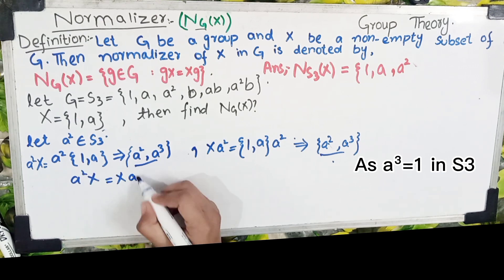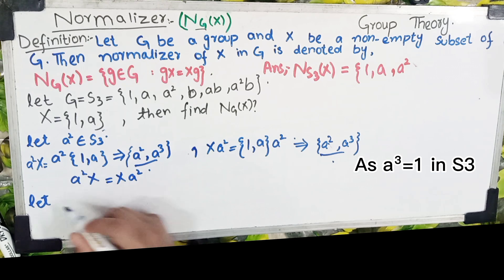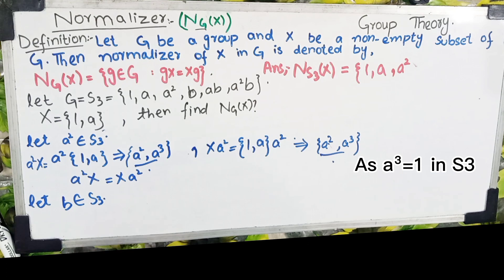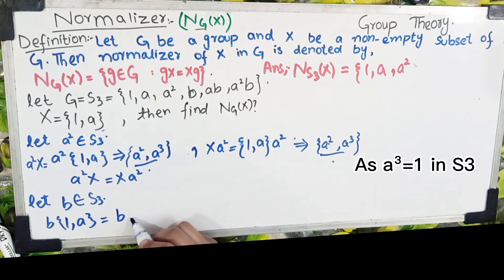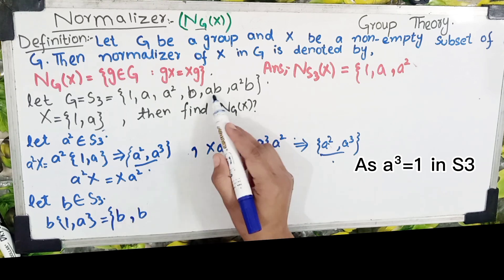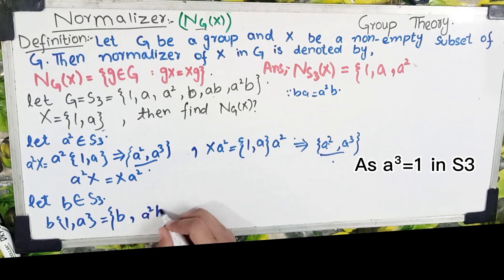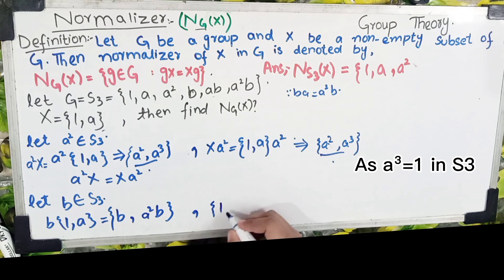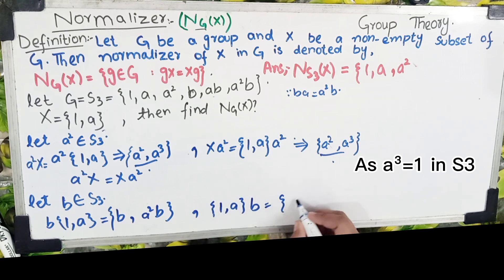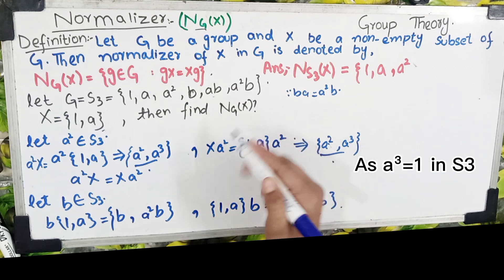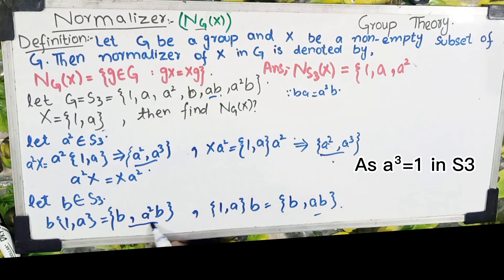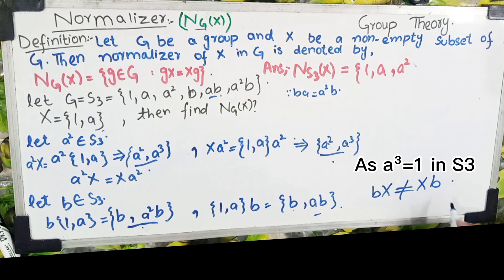Next element: let b ∈ S3۔ b کو left side سے permute کراتے ہیں: b·{1, a} = {b, ba}۔ ba = a²b ہوتا ہے، تو {b, a²b}۔ اب right side سے: {1, a}·b = {b, ab}۔ ab group کا element ہے۔ Left side کا answer {b, a²b} اور right side کا {b, ab} — یہ equal نہیں ہیں، so b·X ≠ X·b۔ b normalizer میں نہیں آئے گا۔